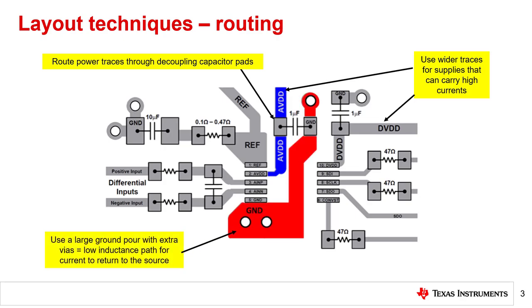Finally, don't forget that ground is a supply too. Ground serves as the current return path for both signals and supplies. Using a large ground pour or plane with extra vias reduces the return path inductance and allows return currents to easily make their way back to the source. Conversely, placing a ground pour that extends for some length without sufficient connection to the ground plane can act as an antenna and will have a resonant frequency. This should always be avoided.